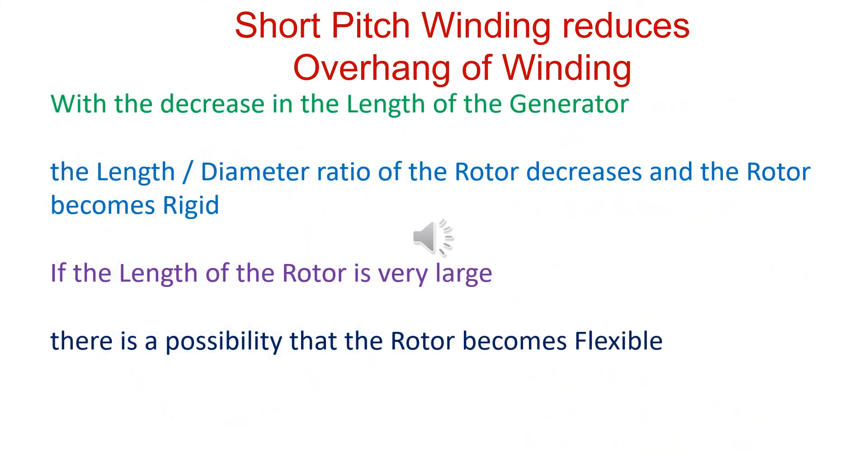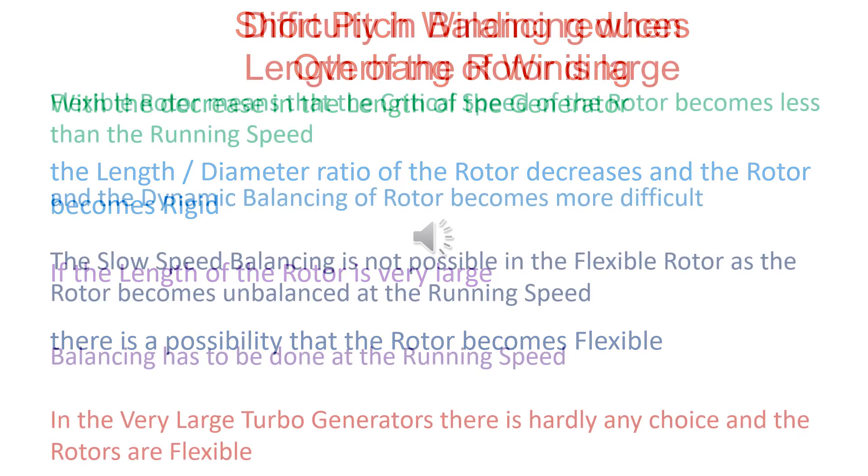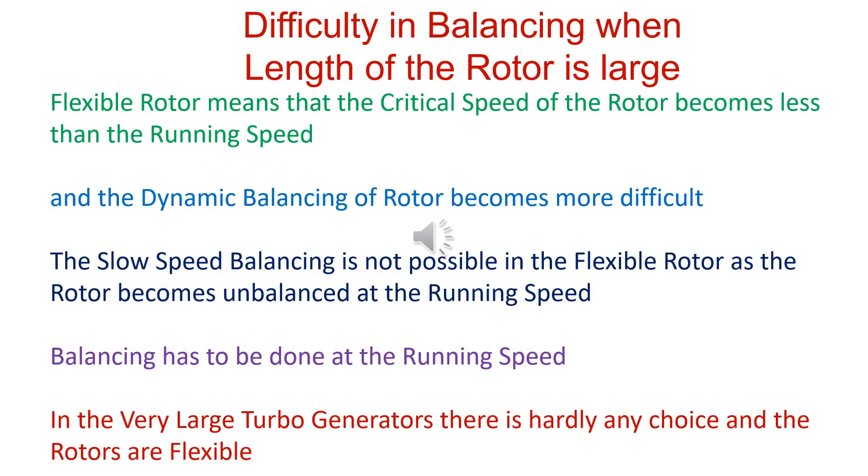Length by diameter ratio of the rotor is reduced. If the length of the rotor is very large, the rotor may become flexible. Critical speed, especially in two-pole machines, may become less than running speed, and dynamic balancing becomes difficult.